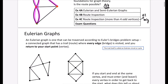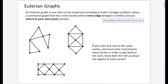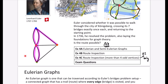An Eulerian graph is one that can be traversed according to Euler's bridges problem setup — it's a connected graph that has a trail where every edge is visited and you can return to your start point. If you can do this, the trail itself is called an Eulerian circuit or Eulerian cycle. The Königsberg network was not Eulerian — it was not possible to traverse all edges and return to the starting point.